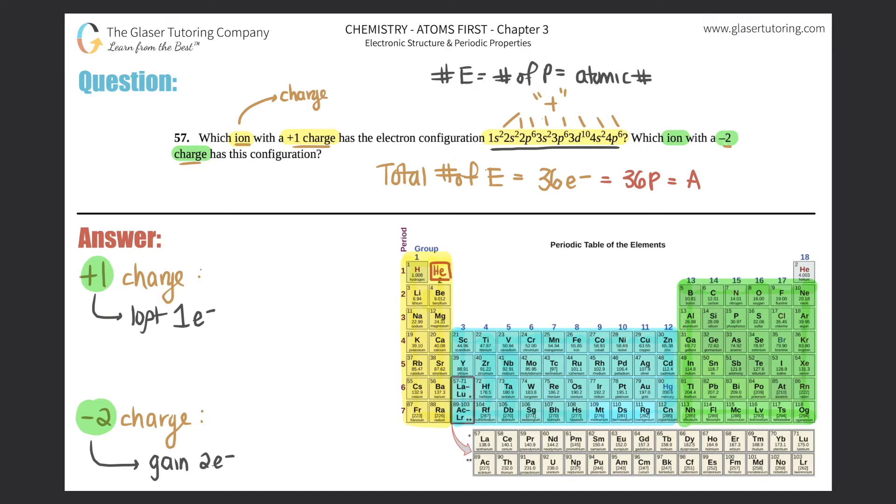If there were 36 electrons in this atom, there would be 36 protons, which tells me the atomic number. I'm looking for number 36: krypton. Now we have to find out who was krypton with these charges.